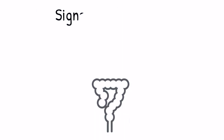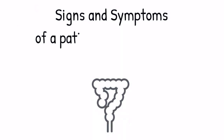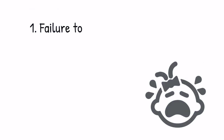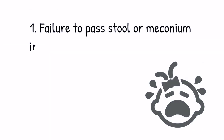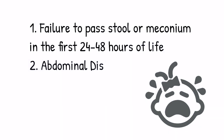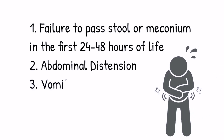What are the signs and symptoms of a patient that might have Hirschsprung's disease? The first thing that we look for is the failure to pass stool or meconium in the first 24 to 48 hours of life. Often these patients also present with abdominal distension and potentially also vomiting.